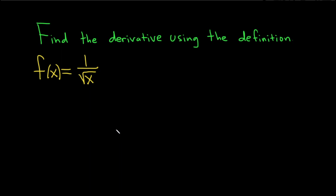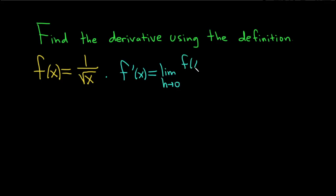Find the derivative using the definition for f(x) = 1 over the square root of x. The definition of the derivative we are going to use is: f prime of x is equal to the limit as h approaches 0 of f of x plus h minus f of x, all over h. This is the derivative of the function at x.